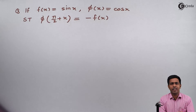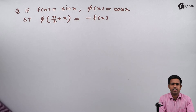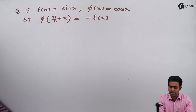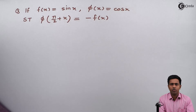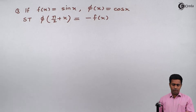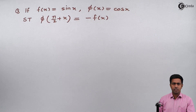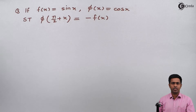Hello everyone. Here in this problem, f of x is given as sin x and phi of x is given as cos x, and we have to show that phi of pi by 2 plus x is equal to minus f of x. We have been given two transcendental functions and we have to prove phi of pi by 2 plus x equal to minus f of x.